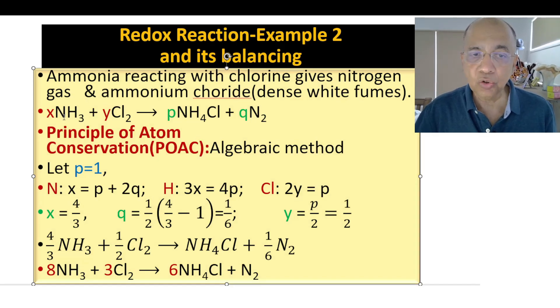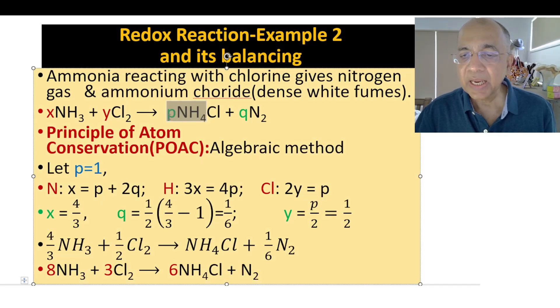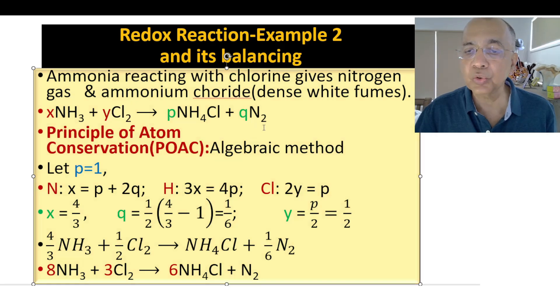So we build up one equation for nitrogen balance: x = p + 2q. Then let's go for the hydrogen balance. So in ammonia the number of hydrogen atoms is 3x, and in the right side it is 4p. And there is no hydrogen here, so you have another equation: 3x = 4p. And the last is for chlorine, so here it is 2y will be equal to p.